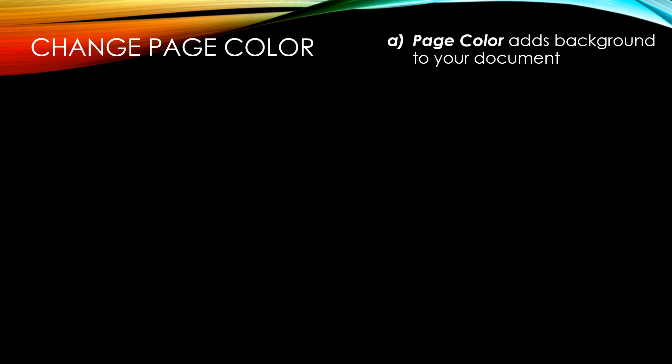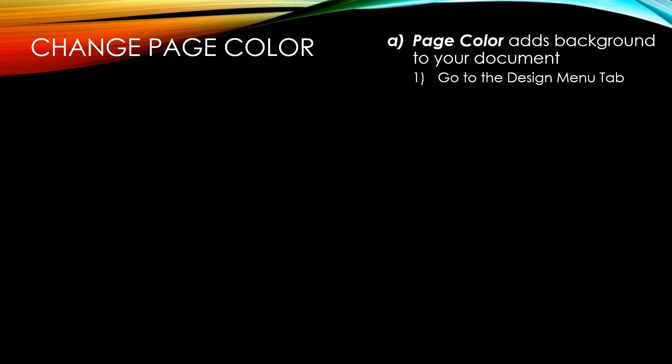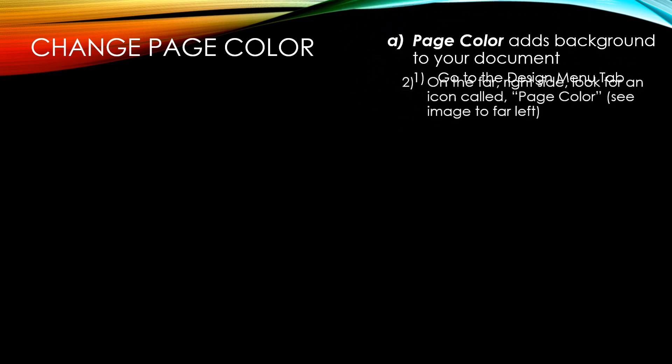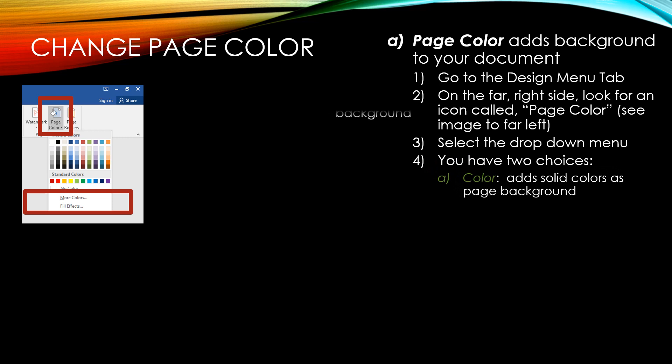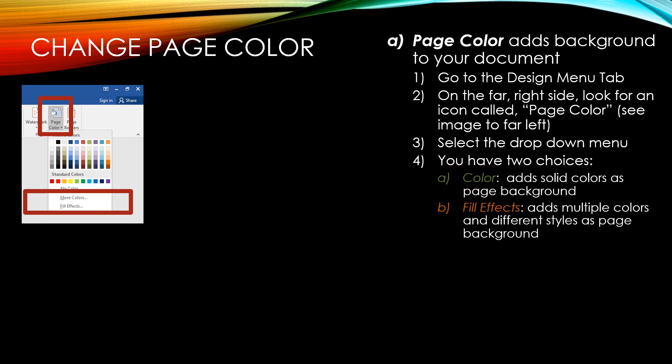Changing your page color, or what is often called the background color. The page color adds a color background to your document. To change your page color, go to the Design menu tab. On the far right side, look for an icon called Page Color. Select the drop down menu and you will have two choices. First, you can choose a solid color as a page background. Or you can select Fill Effects, which gives you options to add multiple colors and different styles as a page background.